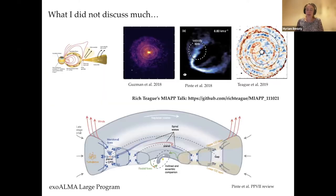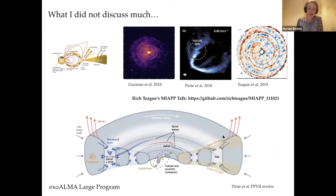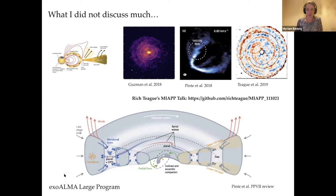I haven't discussed the substructures found in the gas — I only briefly mentioned those for gravitational instability. The gas dominates the mass budget and the whole dynamical evolution of the disk. That's what we want to probe with our ALMA large program EXO-ALMA, where we will observe 15 disks with very deep observations and very high spectral resolution. I encourage you to check Richard Teague's MIAP talk, available online.